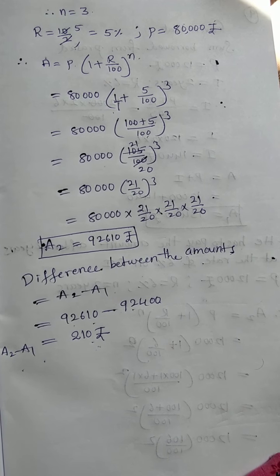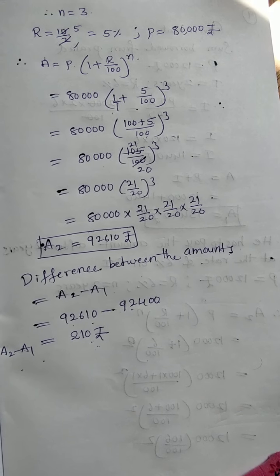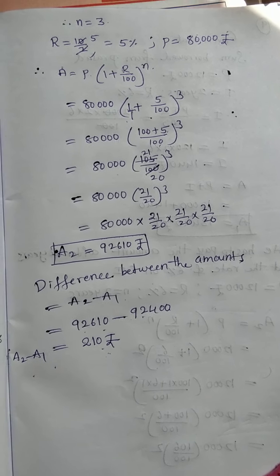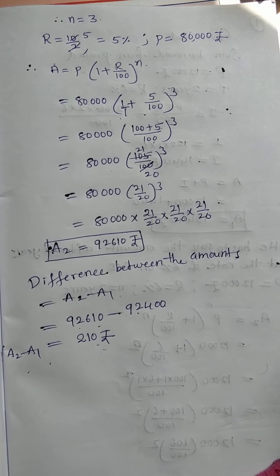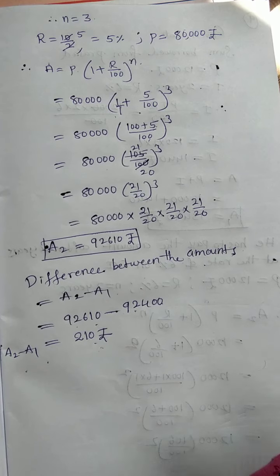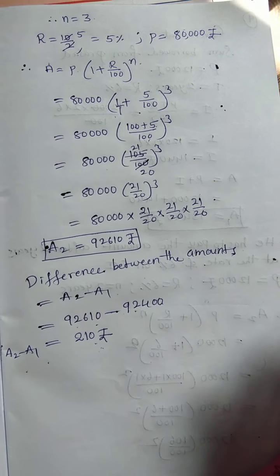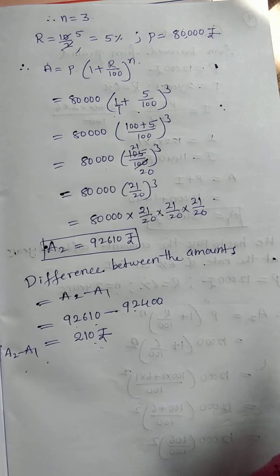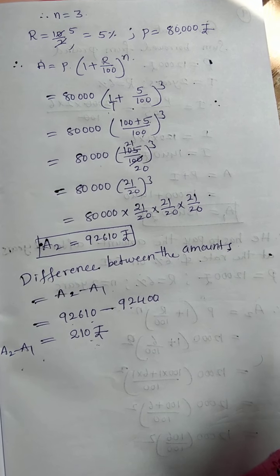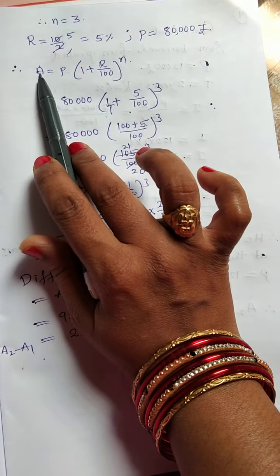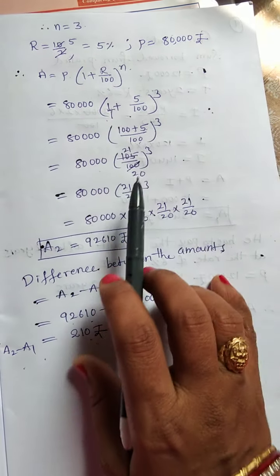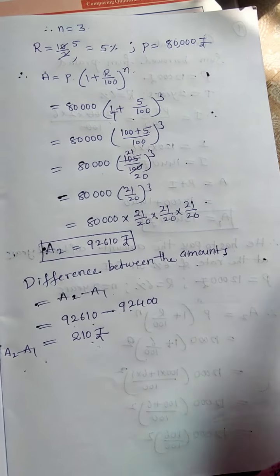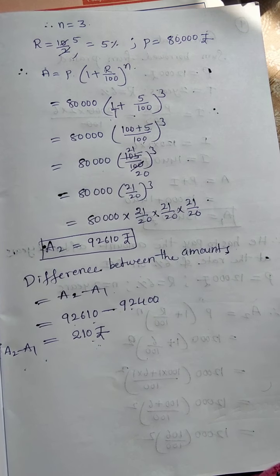Those who are watching should write this in their notebook and practice it once again by themselves to check whether they are getting it or not. It is very simple: find the interest for one year, then for six months, then use three conversion periods (n = 3) to find the amount for half-yearly compounding, and take the difference.